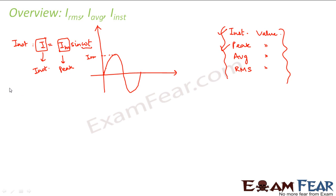What about the RMS value? The RMS value is nothing but the peak value divided by root 2, so it comes somewhere below the peak value of current on the graph — that is I_RMS. This I_RMS represents the effective value of current for this alternating current. If somebody asks effectively how much current there is, the answer is your RMS current.